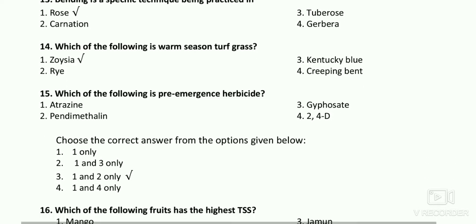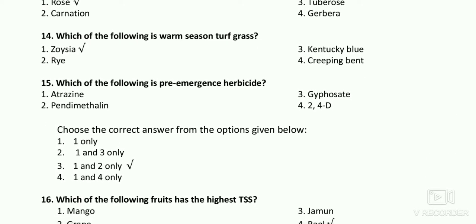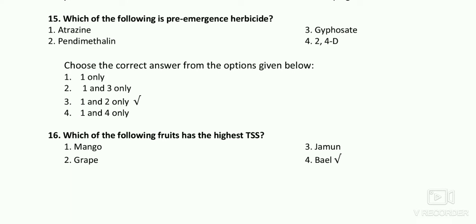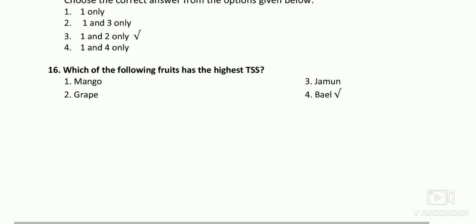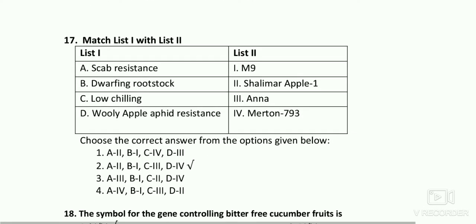Which of the following is a pre-emergence herbicide? Atrazine is pre-emergence, pendimethalin is pre-emergence, and glyphosate is post-emergence. The right answer is atrazine. Which of the following fruit has the highest TSS? The right answer is bael.